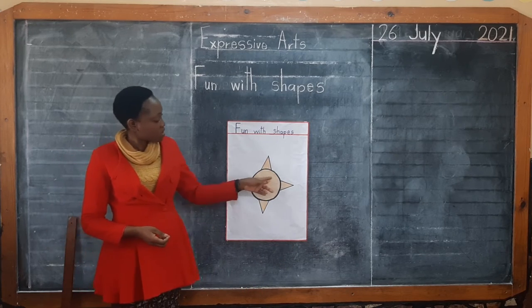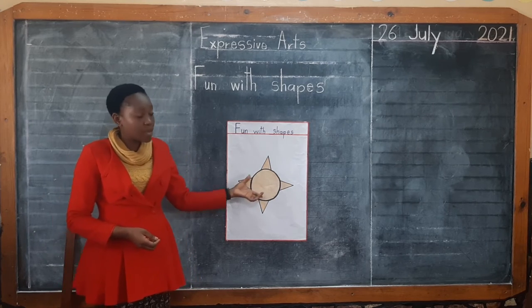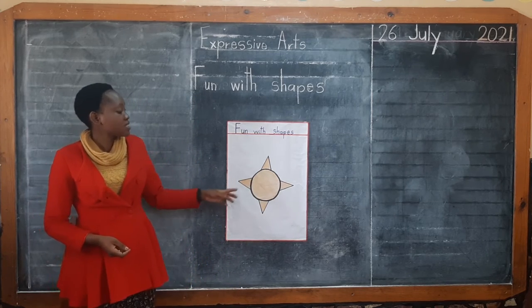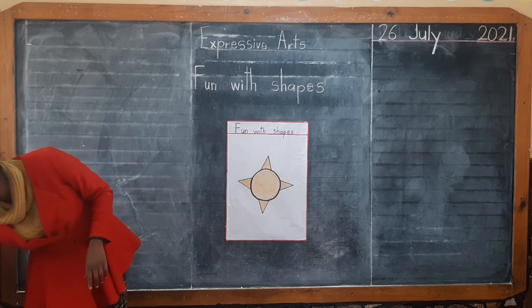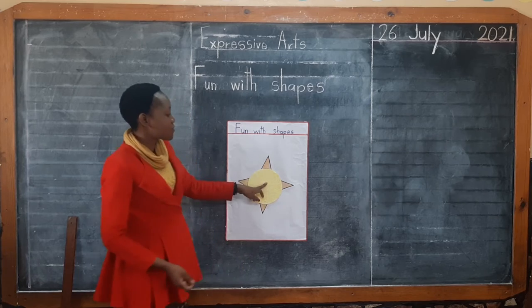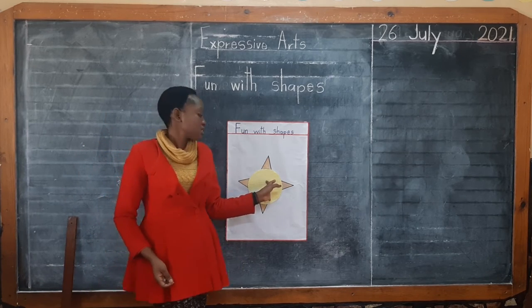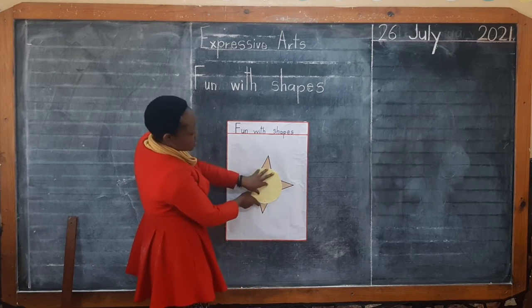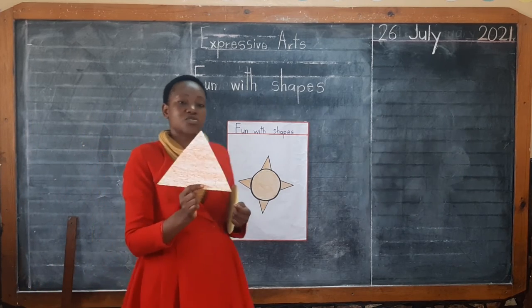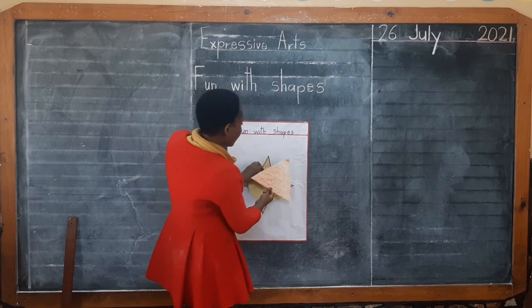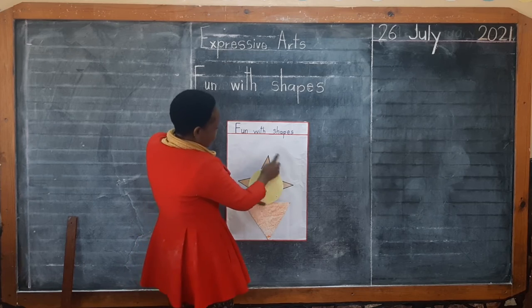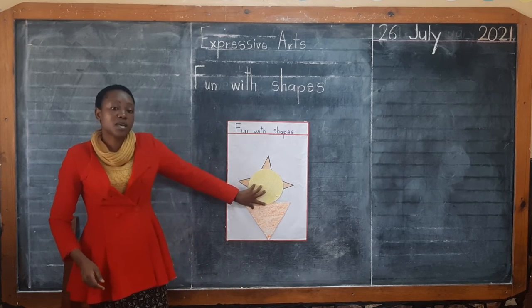I'm sure we can all see the shapes used inside here. The bigger shape used to make the sun is the circle. Then on the sides we used the triangle. So to make the sun we are using these two shapes — the circle and the triangles — placed around it like that.